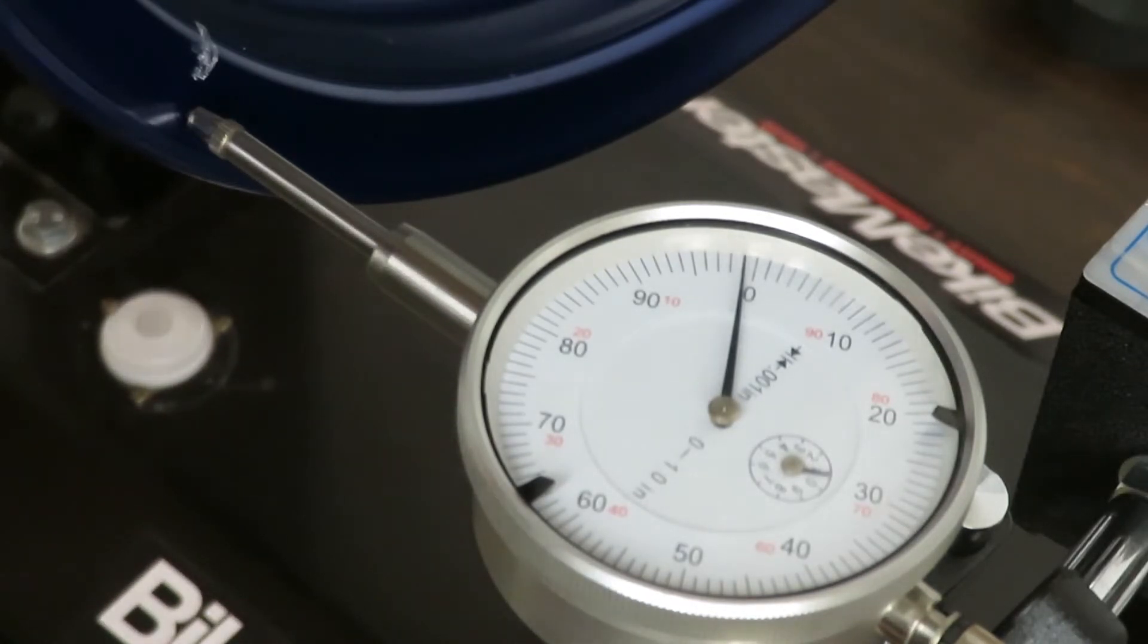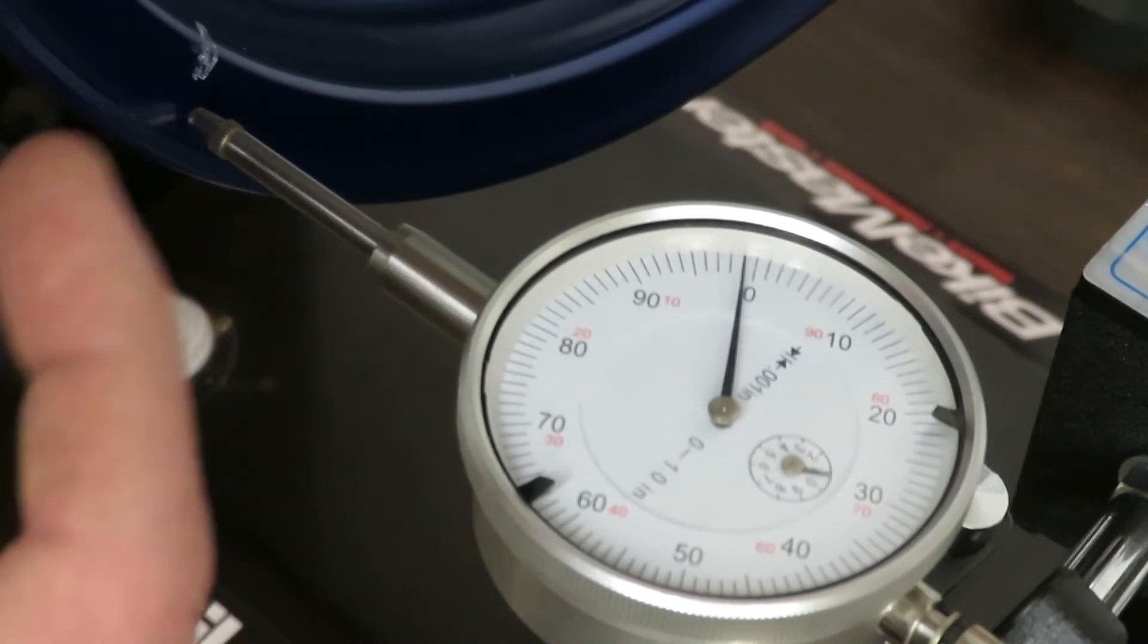At this point, what you'll want to do is flip the wheel and do the exact same measurement on the other side.